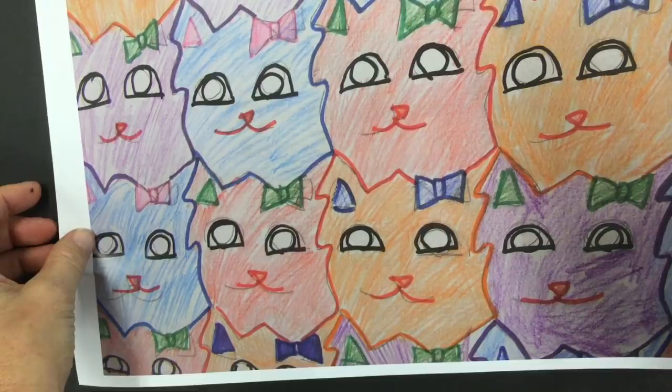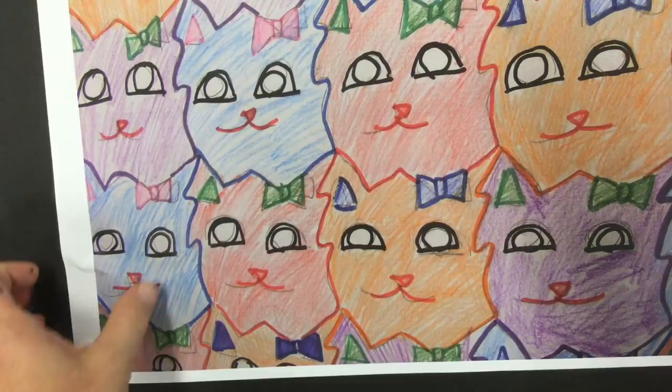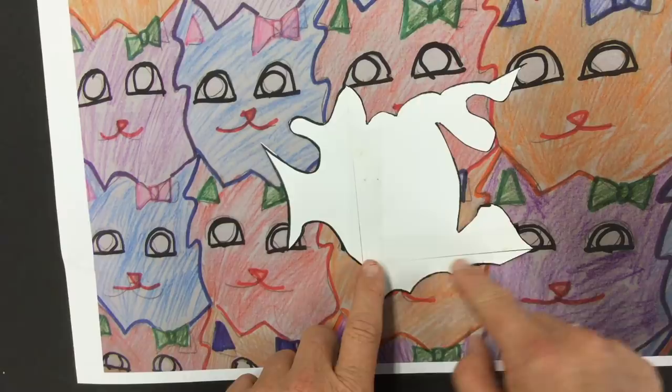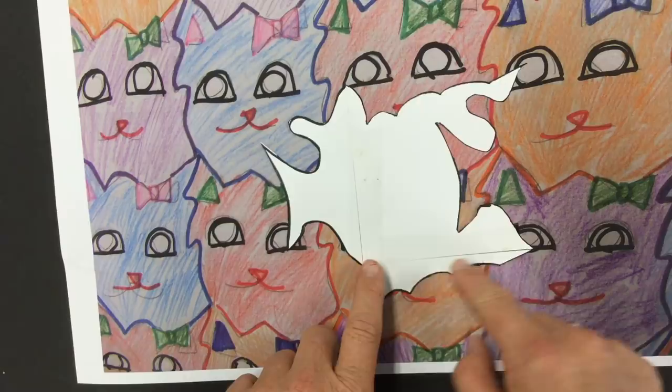So as simple as that, just using a 10 centimeter by 10 centimeter square, you create a tracer. And with the tracer, it will slide into each other to create your tessellation. A lot of fun. Have fun with it and enjoy.